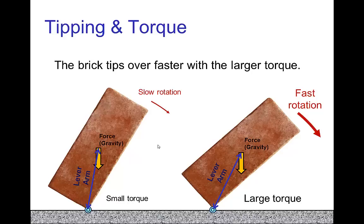Here's another example of torque creating a rotation. When a brick is tipping over, if it's at a shallow angle, the lever arm is the distance from the point of rotation to the center of gravity. The force of gravity acts at the center of gravity. At this point it's a small torque because the force of gravity is pointing more or less in the same direction as the lever arm. If it pointed exactly in the direction of the lever arm, we'd have no torque and the brick would be precariously balanced. In this case it's a little off balance, so we have a little torque causing a bit of rotation.